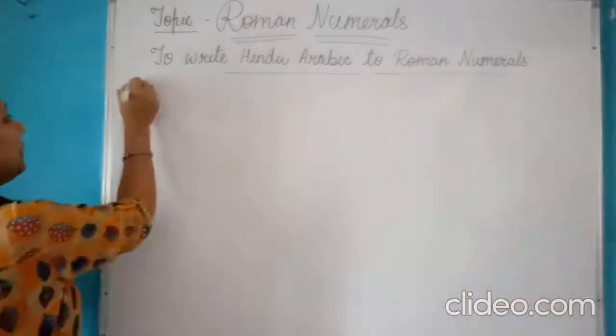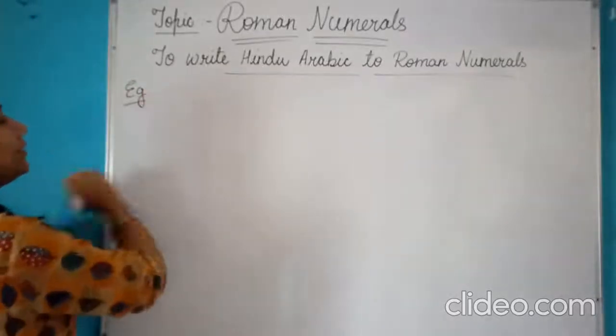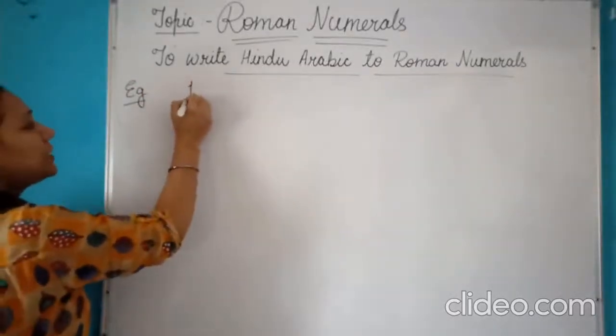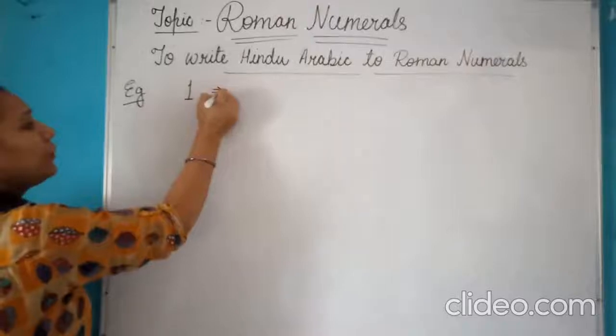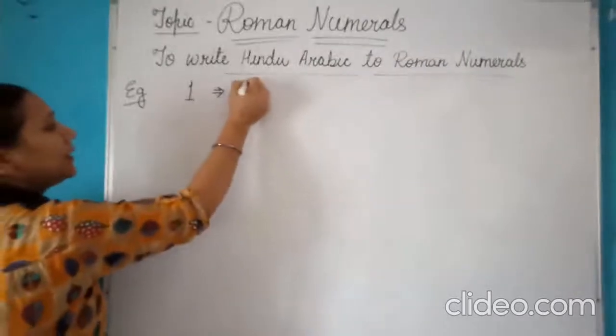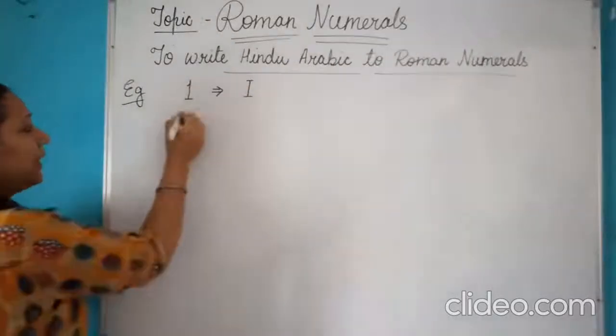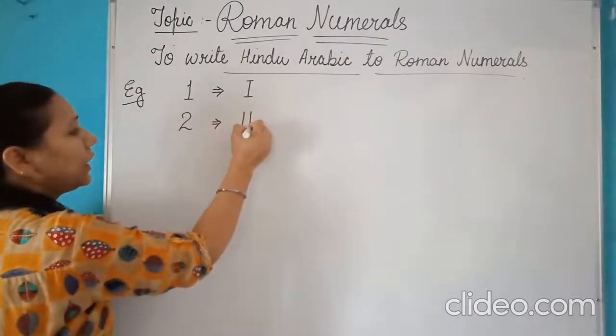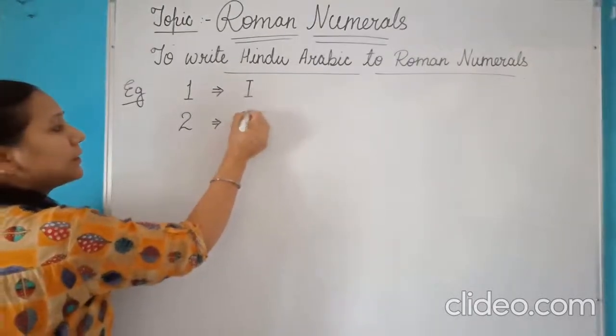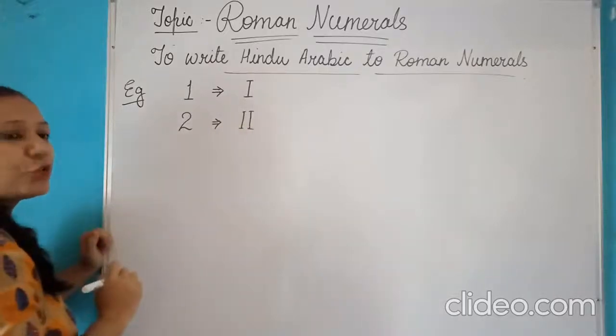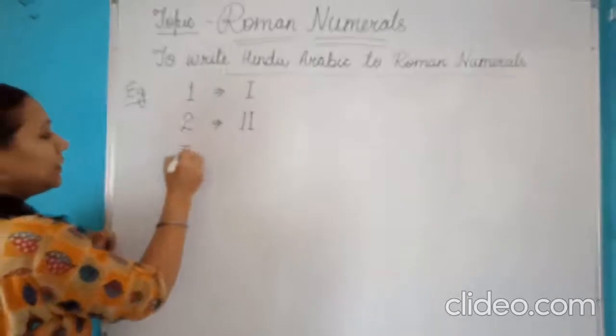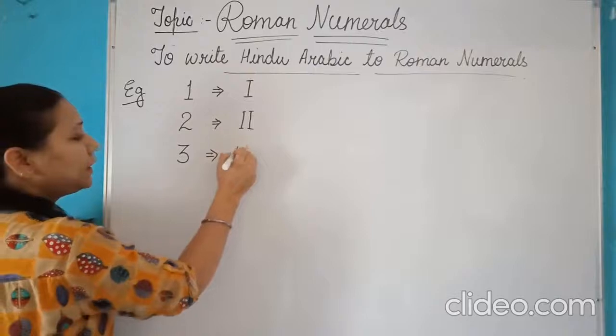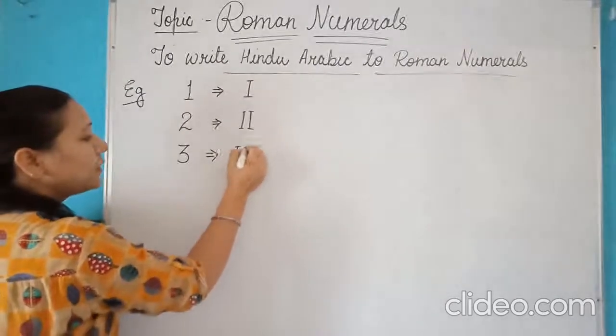Now, for example, if I start with 1, so if I have to represent 1 in Roman numeral form, I will represent it by an I. If I have to represent 2, then it is 2 I's like this. The number 3 will be represented by 3 bars of 1.